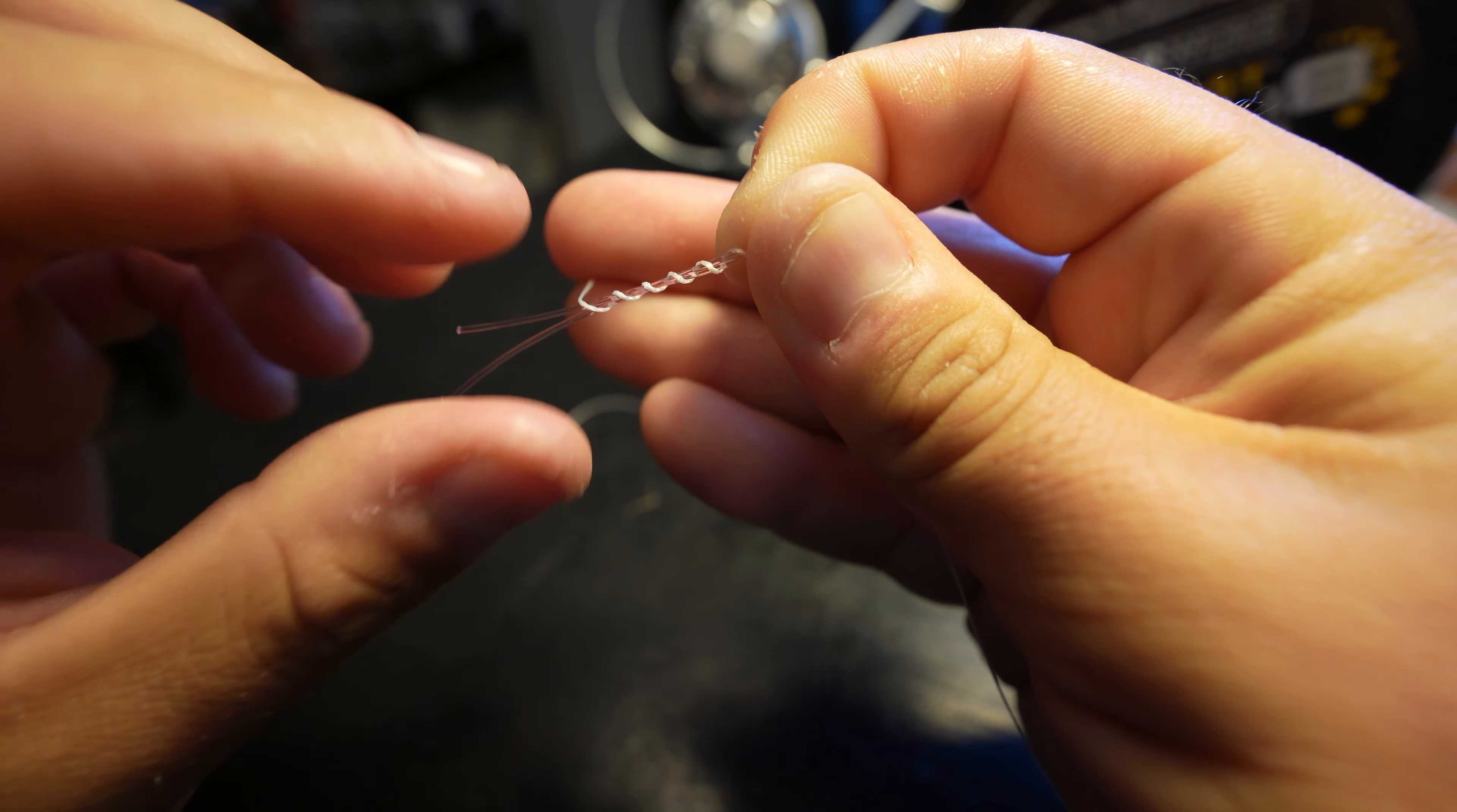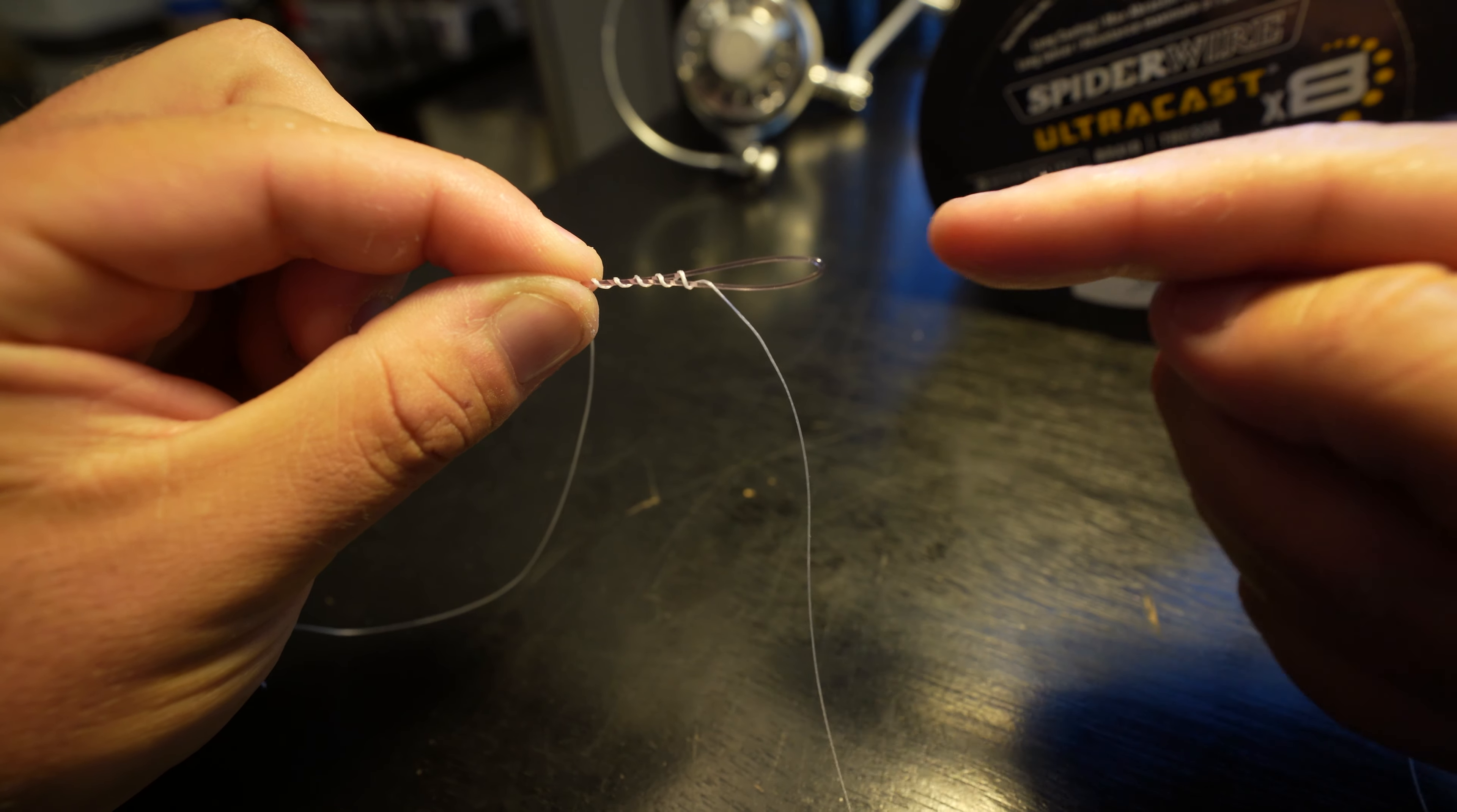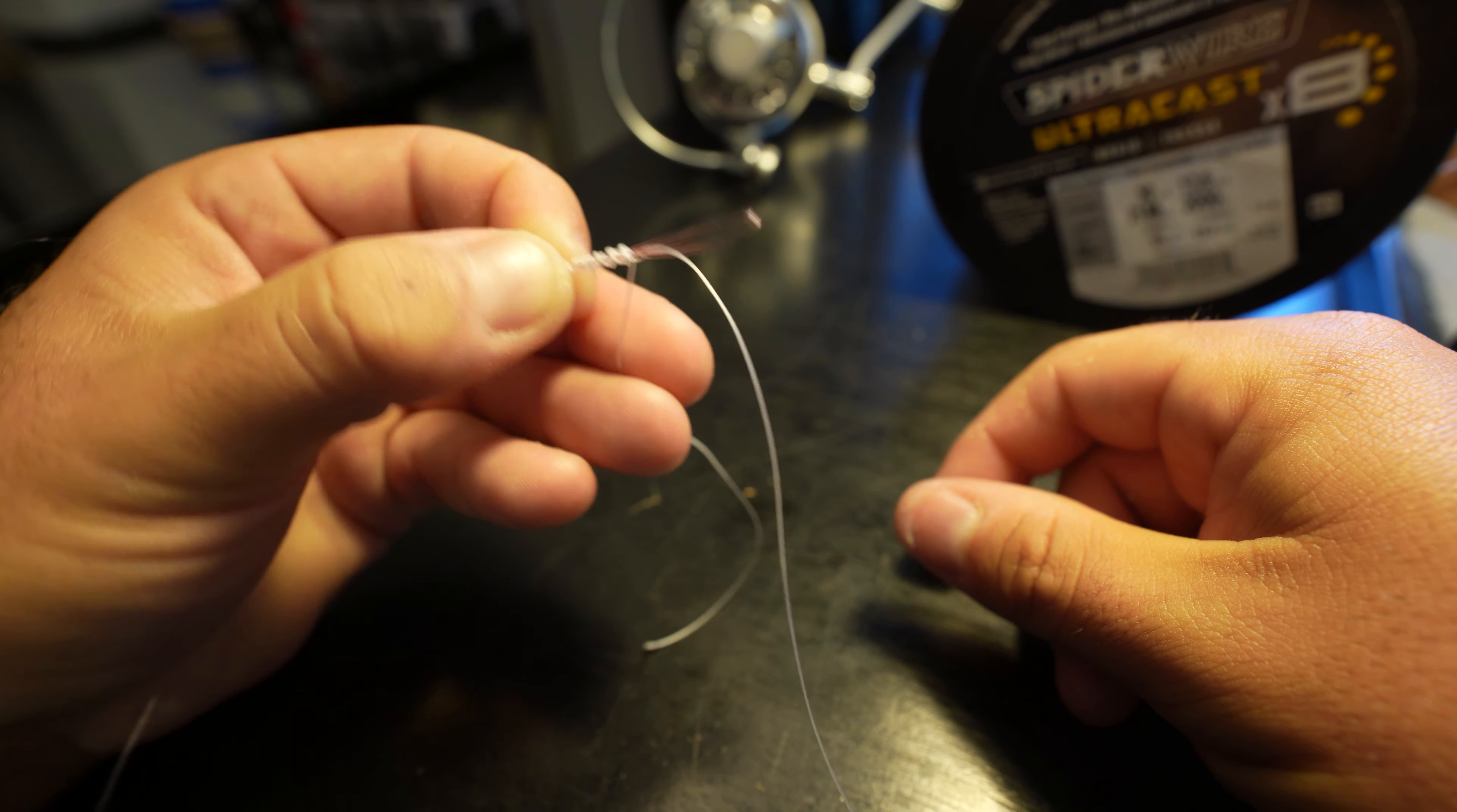Now we're going to switch hands. We're going to pinch this tag end here - pinch everything, our mono and our braid, with our left hand. Now it should look just like that. Now take your right hand and keep wrapping it in the same direction we started, about six times, kind of cross-threading that braid there until we get up to the front. One, two, three, four, five, six. I'm going to do just one more - seven. Now we're here.